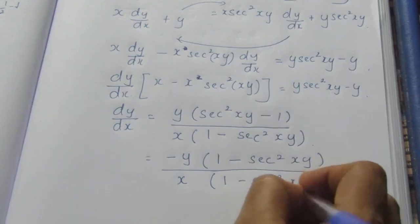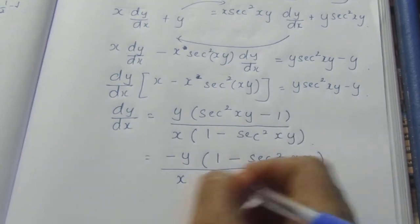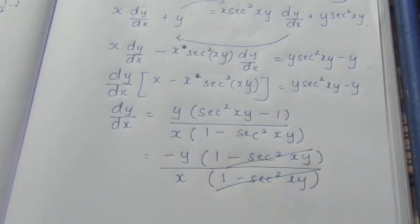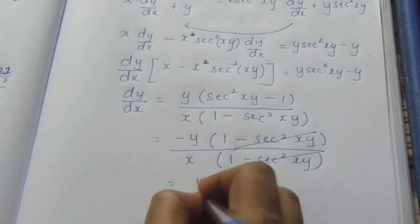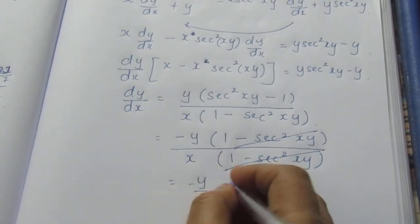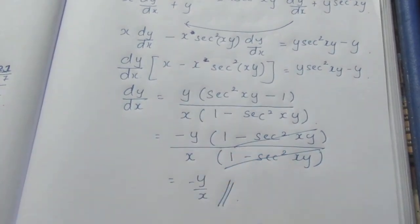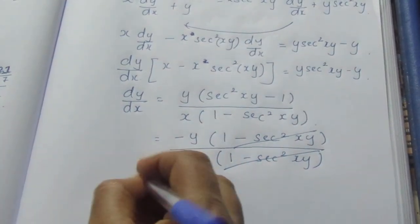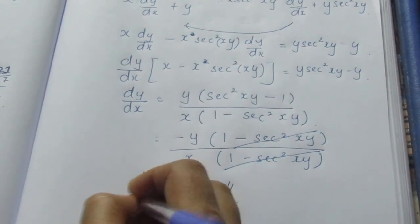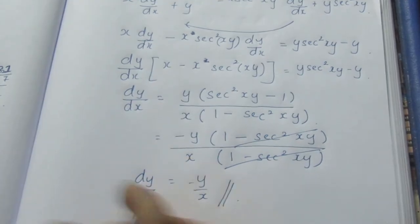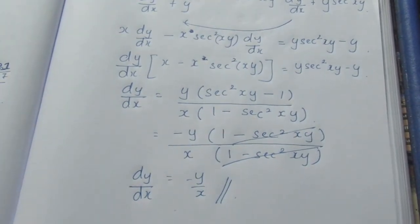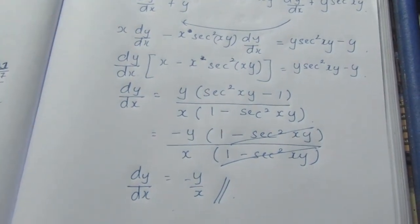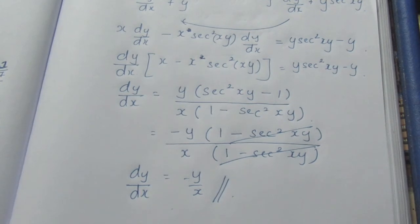Simplifying, since sec squared(xy) minus 1 equals tan squared(xy), the final answer is: dy/dx equals minus y by x. Thank you.